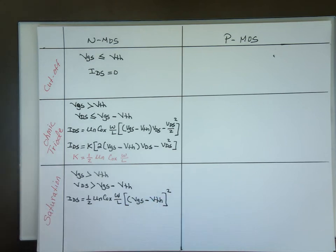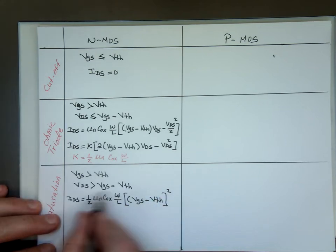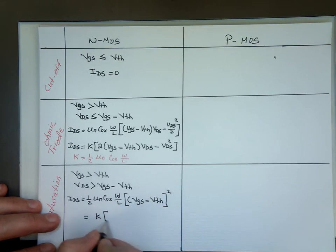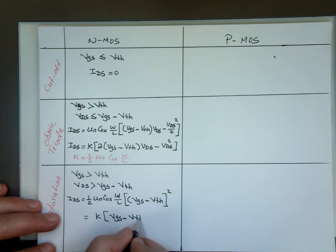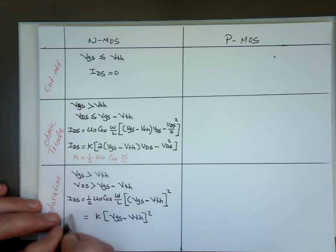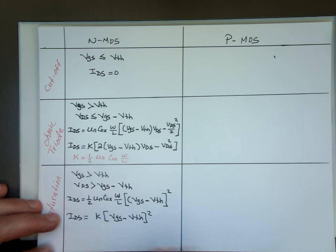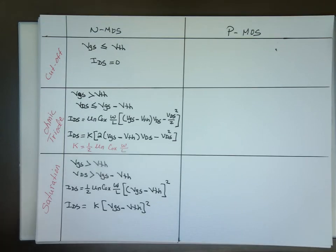VGS minus V threshold squared. And if you want to use K in place of that, K is equal to all of this, you can make it K times what? VGS minus V threshold squared. Again, what is K equal to? It's all this constant right there.